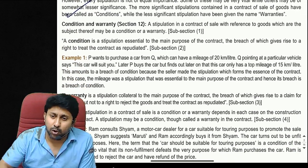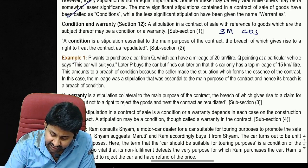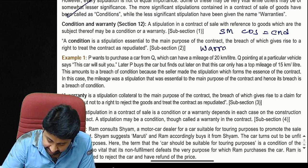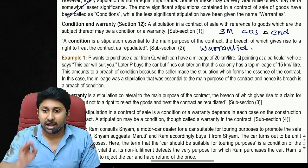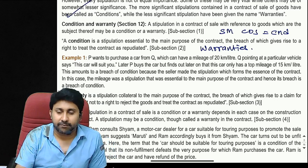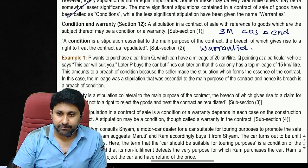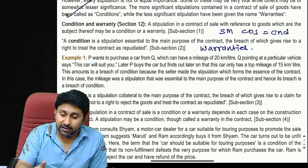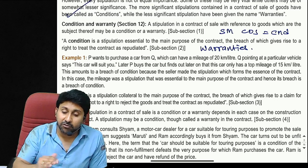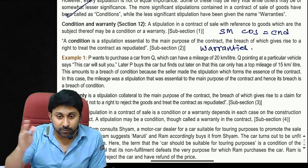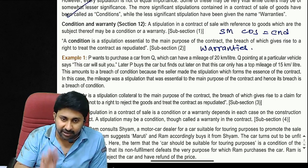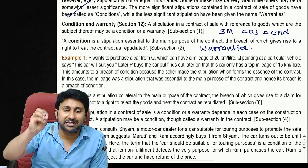The most important subject matter of a contract of sale is called a condition. Additions to that main contract are called warranties. For example: I want 10 cages of onions. The quantity '10 cages' and the product 'onions' are both conditions. If you give only 5 cages, or give tomatoes instead, that is a breach of condition.